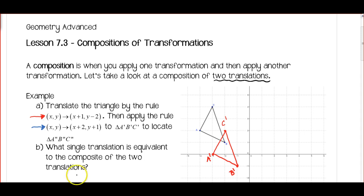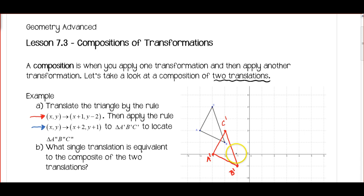Now I'm going to add 2 to each x value and add 1 to each y value. Starting again with A: add 2 to the x's, so move right 2; add 1 to the y's, move up 1. Here's my A double prime.